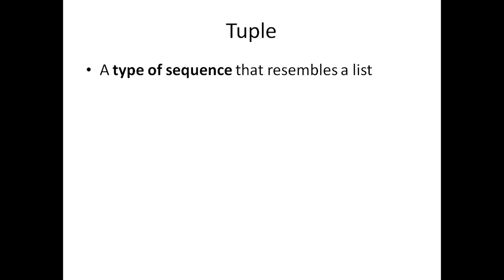A tuple is a type of sequence that resembles a list. We have already seen a list — we can store a sequence of elements inside a list. Similarly, in a tuple also we can have a sequence of items. The only difference between tuple and list is that a tuple is immutable. Immutable means we cannot change the content inside a tuple. But in the case of list, we can modify the contents — list is mutable.